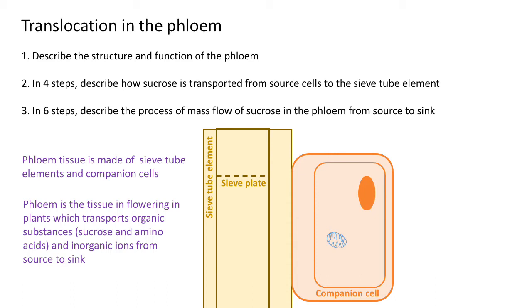We'll look at how that process can occur in any direction next. The four steps of how sucrose is transported from source cells to sieve tube element - let's take a look at that.